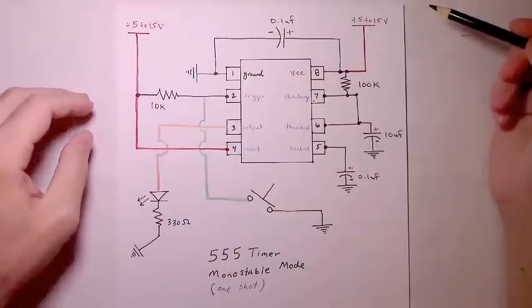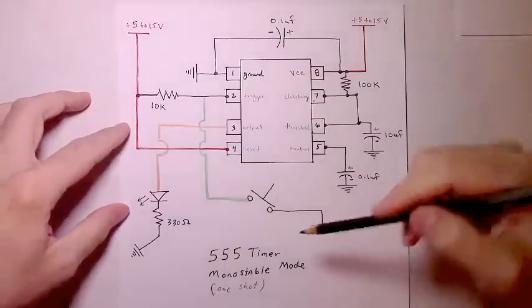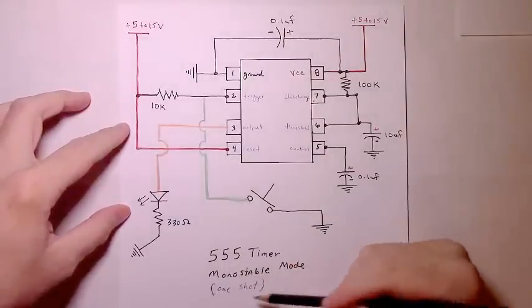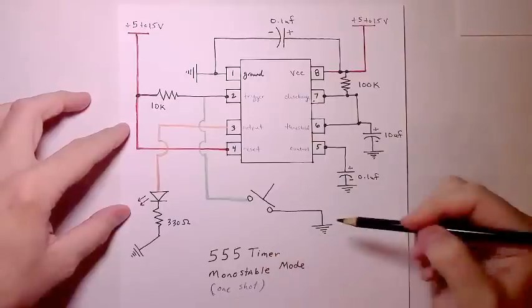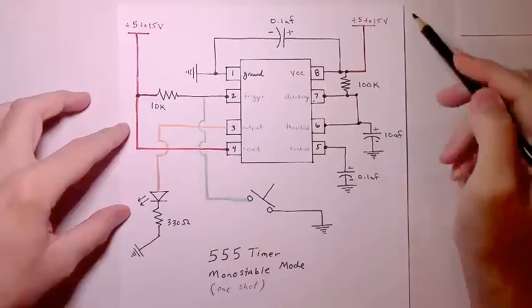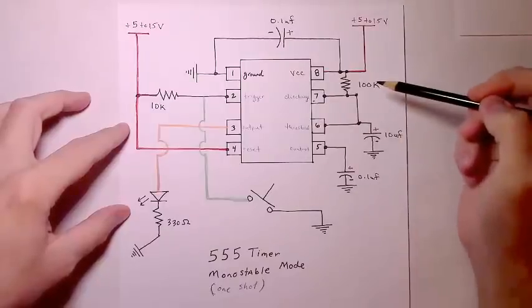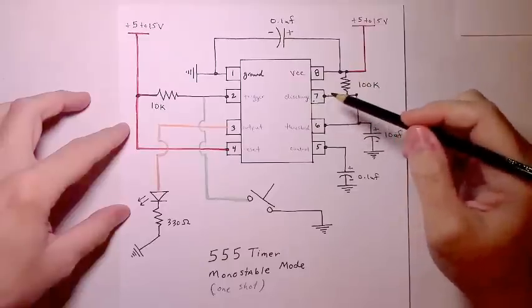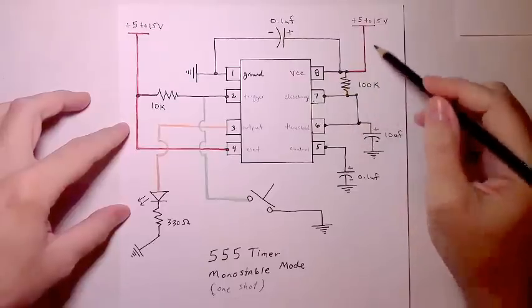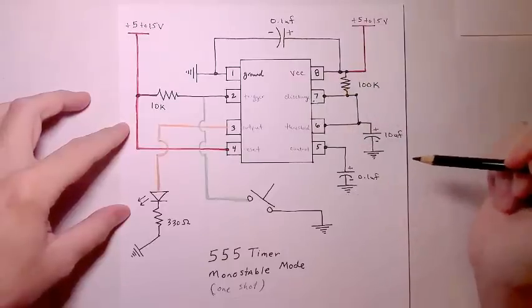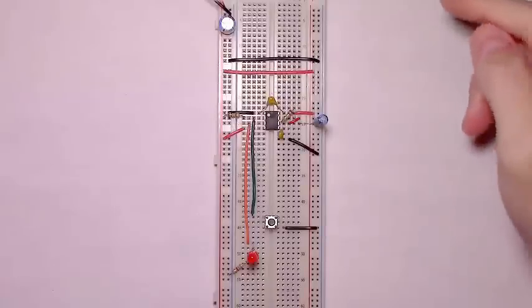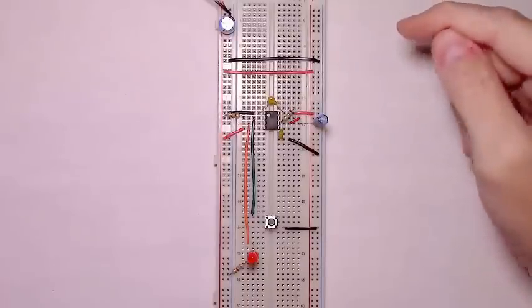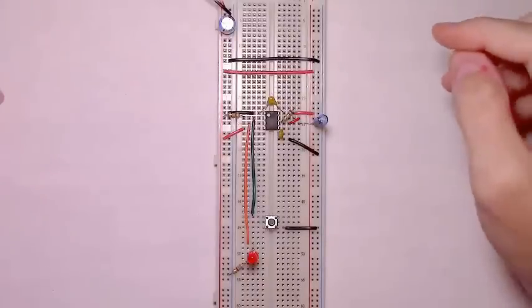Hello again. In this video, we'll be constructing a monostable mode, or what's sometimes referred to as a one-shot mode, 555 timer circuit. Namely, this circuit. We'll go through each step involved in assembling this particular circuit on a breadboard. By the end of this video, we'll have a circuit that looks like this for one to use and experiment with.